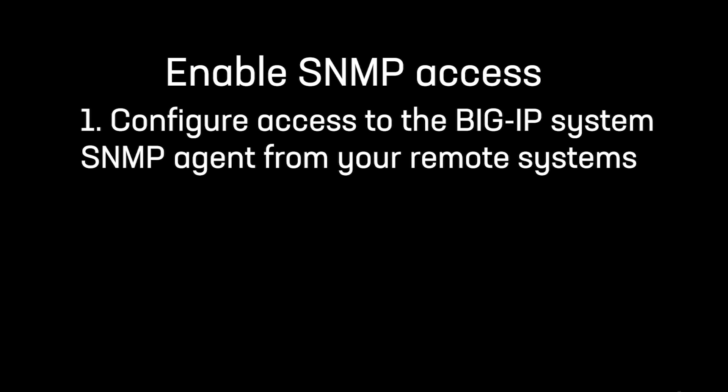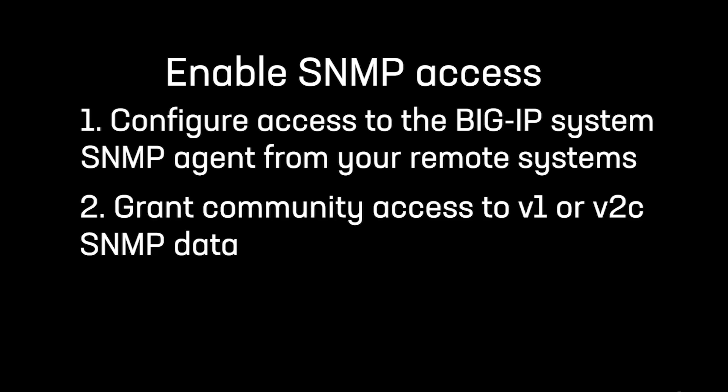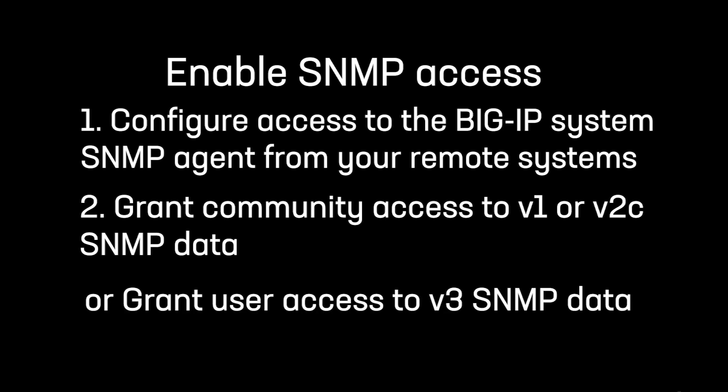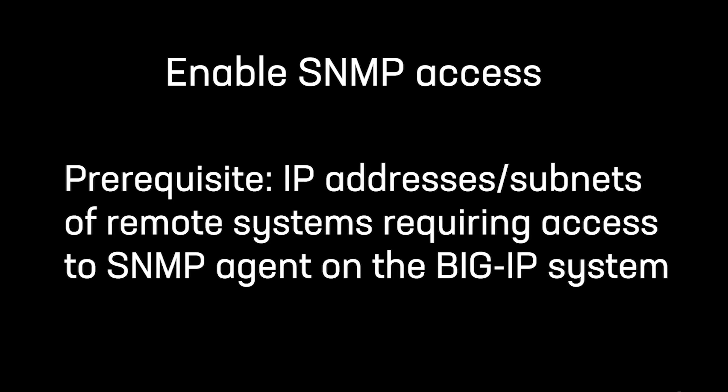1. Configure access to the Big-IP system SNMP agent from your remote systems. 2. Grant community access to V1 or V2C SNMP data, or grant user access to V3 SNMP data. Before beginning, gather the IP addresses or subnets of the remote systems that require access to the SNMP agent on the Big-IP system.